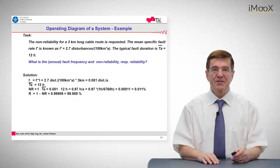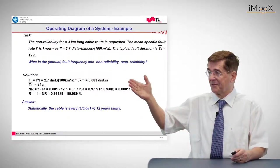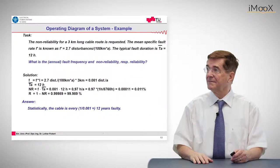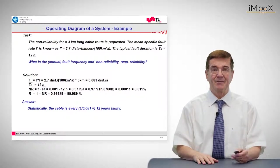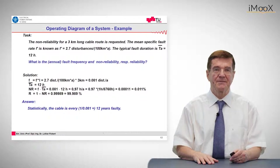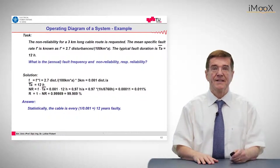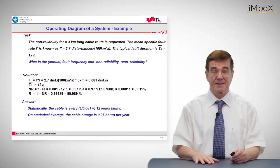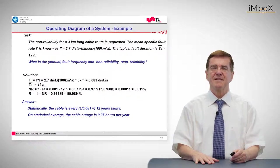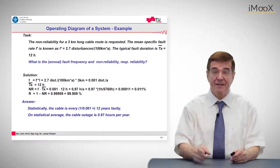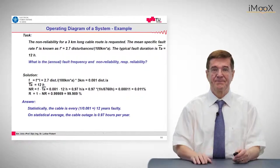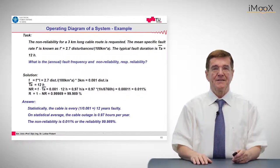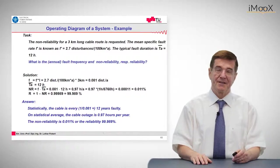The solution is first we determine the frequency of these three kilometers of cable route multiplied with the average outage time of 12 hours, and we arrive at a non-reliability NR of 0.011 percent and the reliability is 99.989 percent, so very high. The answer is the cable is every 12 years out of service and faulty, and on the statistical average the cable outage time is little less than one hour per year, which does not mean in the case of an event it is out for 12 years.